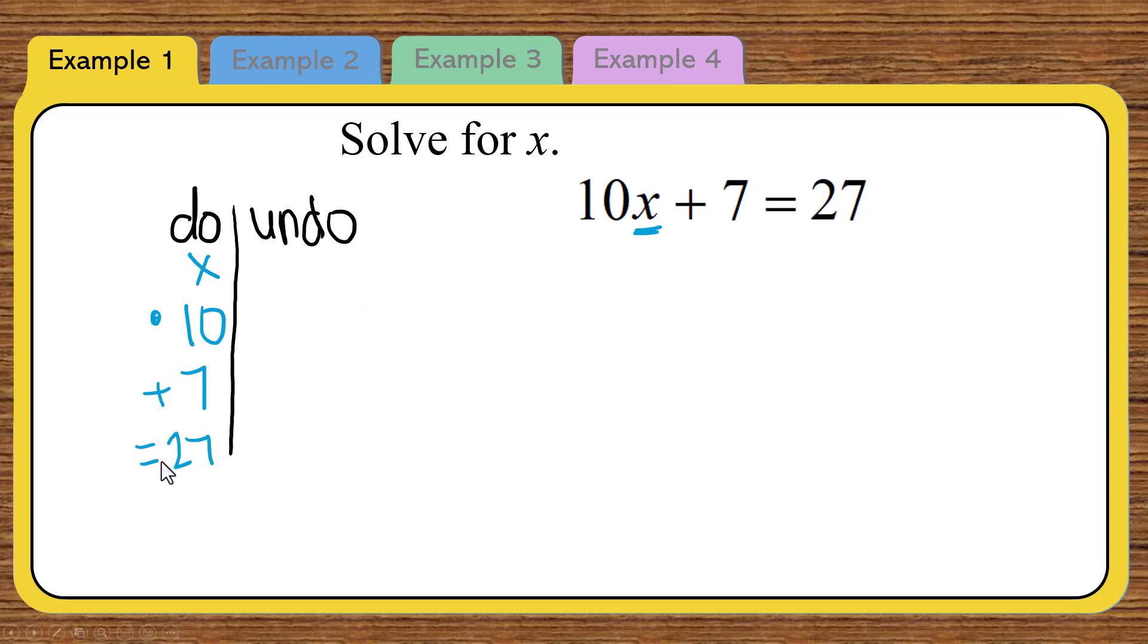Now in order to actually solve for the x, we have to undo all of that. So we have this undo column. We start on the bottom. Now we're going to be going backwards. We're going to undo it. Starting with the 27. Now looking at your table, just do the opposite of what you see. Instead of a plus 7, we're going to do a minus 7. And instead of a multiply times 10, you do divide by 10. And when we do all of those in that order going up, we're going to end up with an answer for x. So let's see if we can figure out what the answer is going to be before we even start solving. So 27 minus 7 is 20. And then 20 divided by 10 is 2.